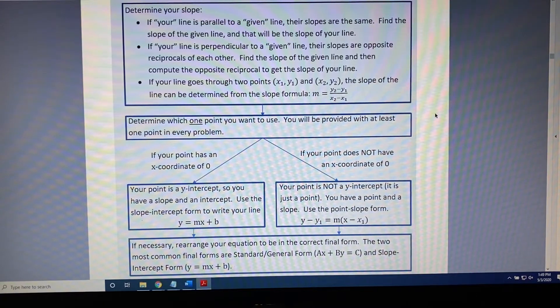For example, the instructions of a problem may say that your final form needs to be in standard form, also sometimes called general form, or the instructions may say that your final answer needs to be in slope-intercept form.